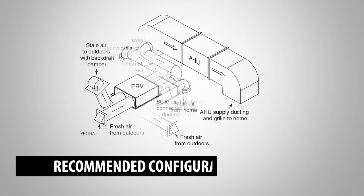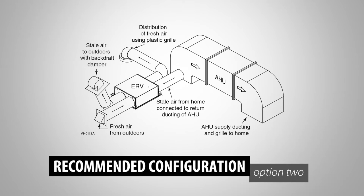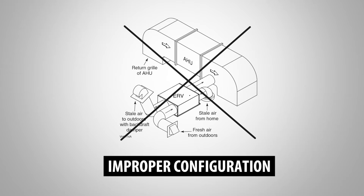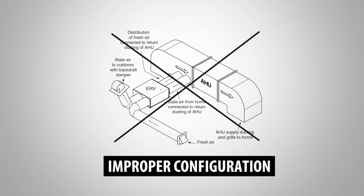The second configuration with the AHU draws stale air from the return ducting of the AHU and distributes fresh air into the living space through registers. Do not connect the system with fresh air from the ERV going into the distribution ducting of the AHU, which can result in condensation issues during cooling season. Do not connect both distribution of fresh air from the ERV and stale air exhaust in the AHU return ducting.